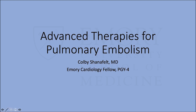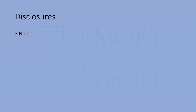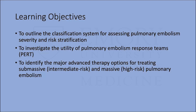I have no relevant disclosures. Starting out with some of the learning objectives: PE is a big topic, and there are a lot of new therapies coming about without a really standardized way of addressing them. I want to outline the classification system, PE severity, risk stratification, the utility behind pulmonary embolism response teams, and identify the major advanced therapy options for submassive or intermediate risk and massive or high-risk pulmonary embolism.